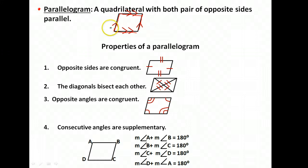Properties that happen all the time, every time with parallelograms, are the following. There are four different things. First, opposite sides are always congruent, which means they're always the same length.